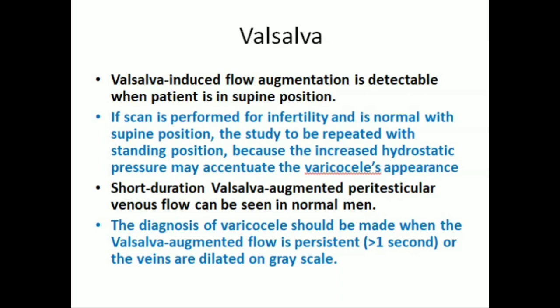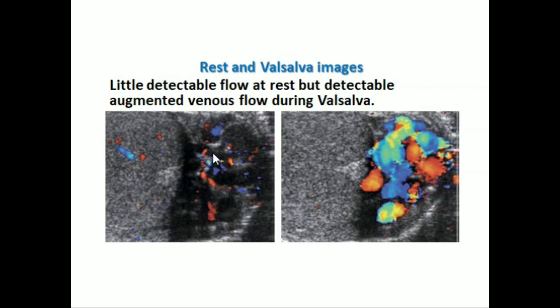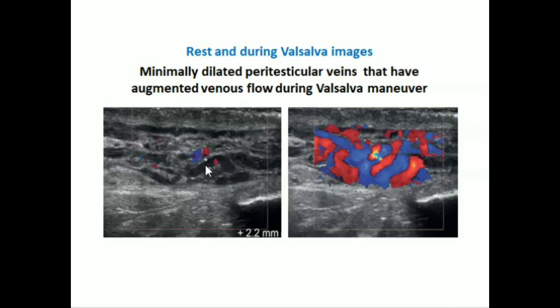Short-duration Valsalva-augmented peritesticular venous flow can be seen in normal men. The diagnosis of varicocele should be made when the Valsalva-augmented flow is persistent for more than one second, or when the veins are dilated on grayscale. These images show rest and Valsalva phases: little detectable flow is present at rest, while detectable augmented venous flow is present with Valsalva. These are also rest and Valsalva images showing minimally dilated peritesticular veins that have augmented venous flow during the Valsalva maneuver.